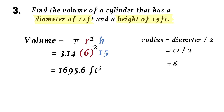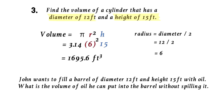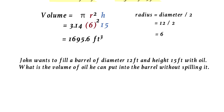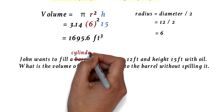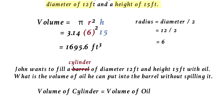Sometimes GED geometry questions are not that straightforward. This same question could be worded as: John wants to fill a barrel of diameter 12 feet and height 15 feet with oil. What is the volume of oil he can put in without spilling? This is exactly the same question. You have to know that a barrel is a cylinder and that the volume of the cylinder equals the volume of oil that can be put in without spilling. You go through the exact same process to get 1,695.6 cubic feet.